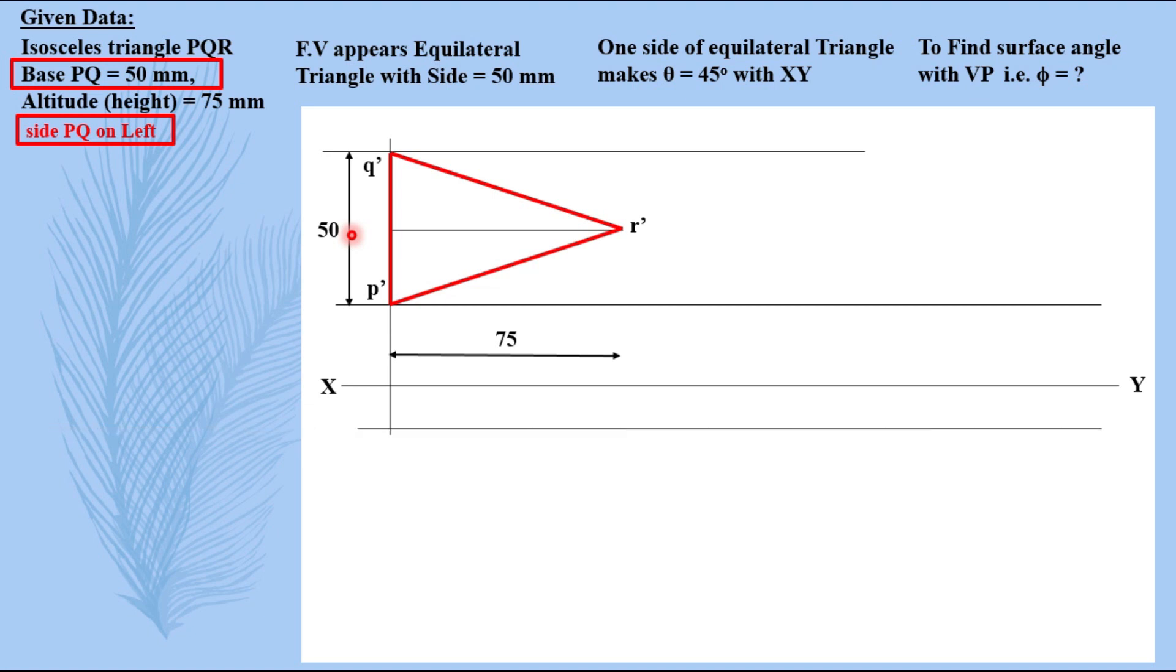Now taking again some distance from XY for the top view because it is also not mentioned any of the point is not given on VP. So you cannot have any of the top view on XY line. So you can draw it away from XY line, this distance still to be assumed. Taking the projectors down then obtaining the top view.